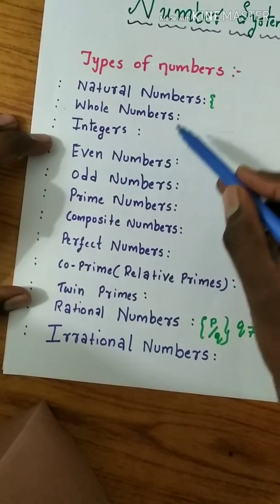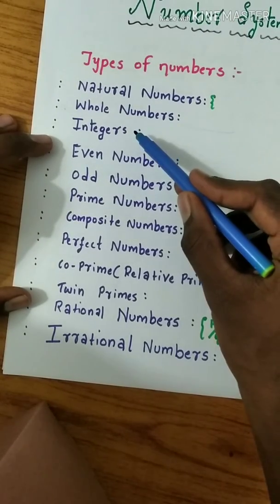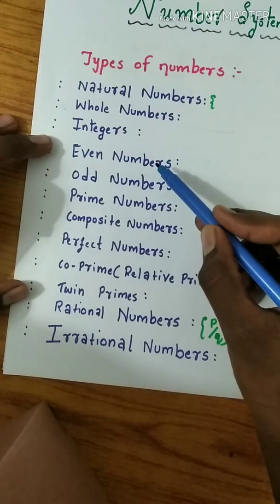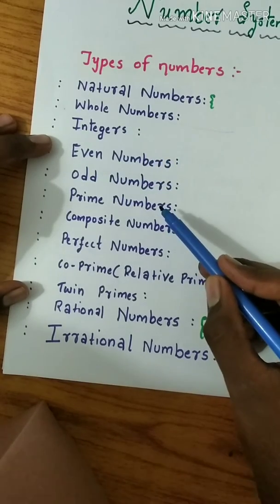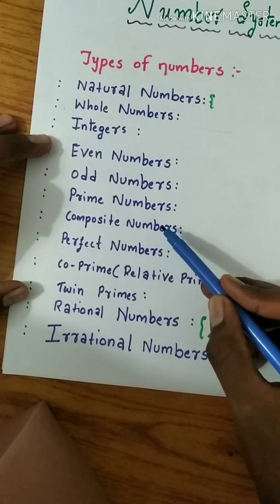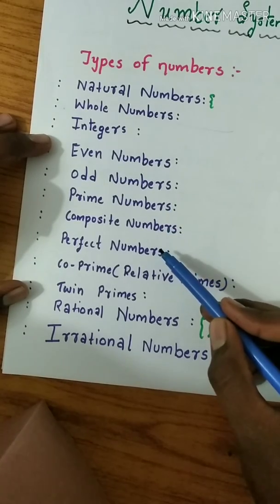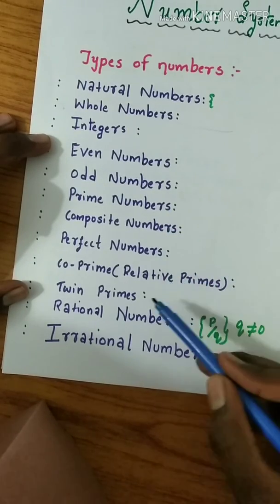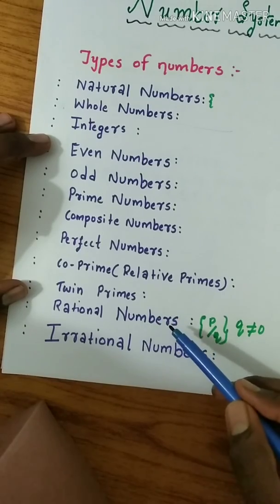Natural numbers, whole numbers, integers, even numbers, odd numbers, prime numbers, composite numbers, perfect numbers, co-prime, twin primes, rational, and irrational numbers.